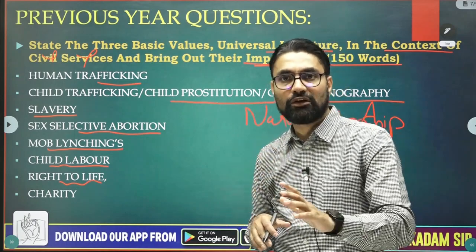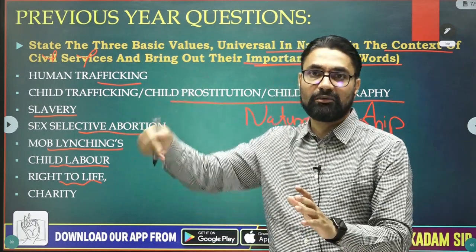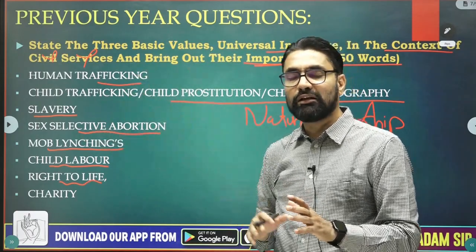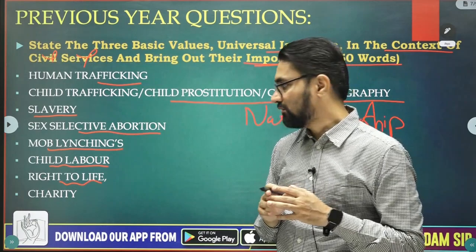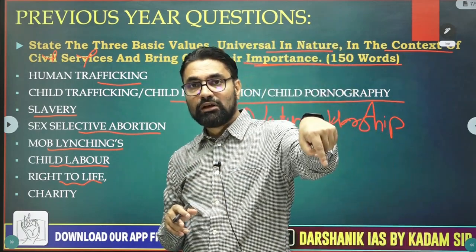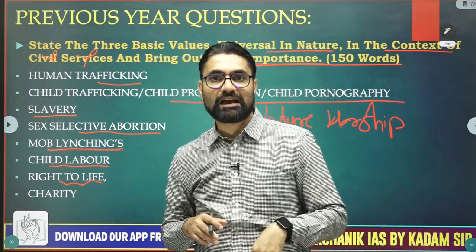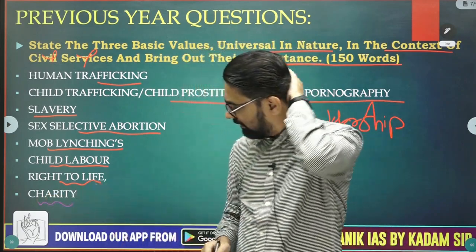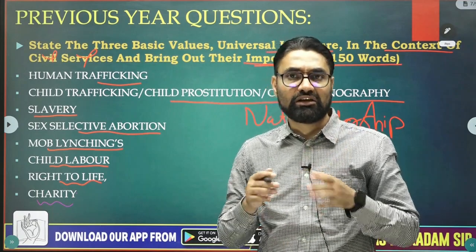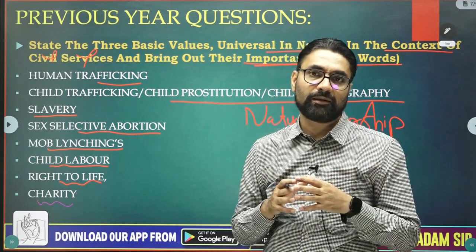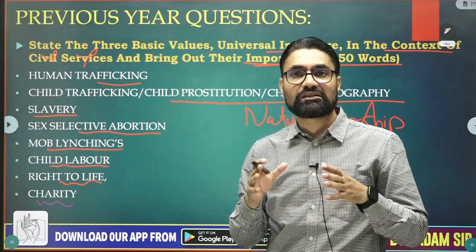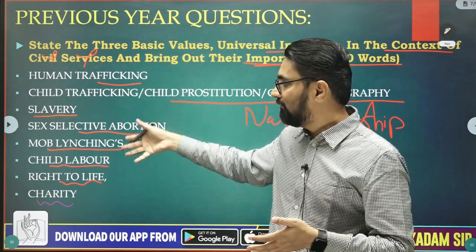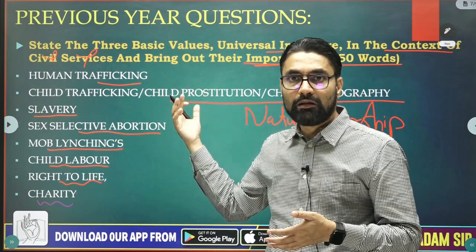Charity is also a universal moral value — no culture or country says charity is bad. So charity is universally recognized as a moral good we need to promote. Among the strong values to write about, choose any three from: nature worship, banning sex-selective abortion, elderly protection, right to life, charity, and Satyagraha — writing these distinctive values will earn you better marks.